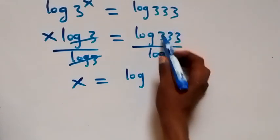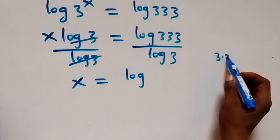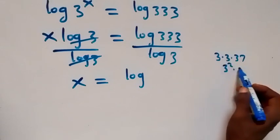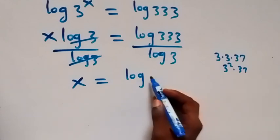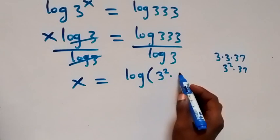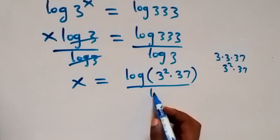Here we can express 333 as 3 times 3 times 37 which is 3 squared times 37. Then we have log 3 squared times 37 over log 3.